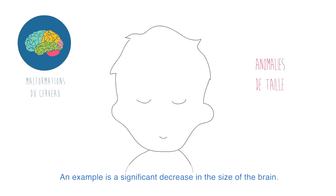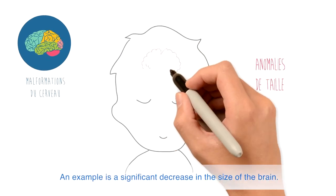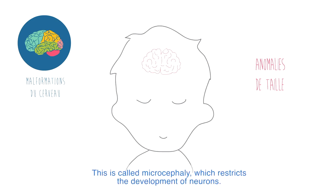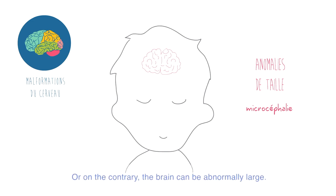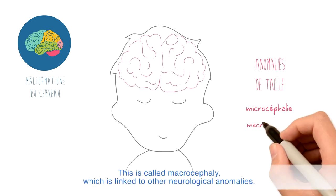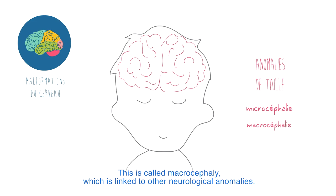An example is a significant decrease in the size of the brain. This is called microcephaly, which restricts the development of neurons. Or on the contrary, the brain can be abnormally large. This is called macrocephaly, which is linked to other neurological anomalies.